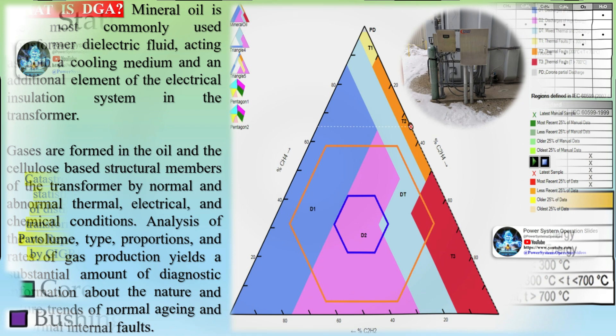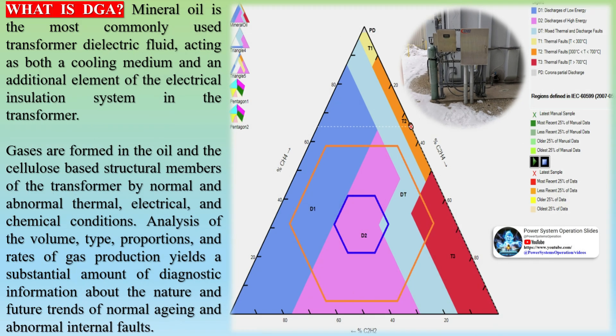In addition to the gas levels, DGA interpretations are based on a large number of variables, such as equipment type, liquid type, past history, history trending, manufacturer, equipment age, voltage, gallons, breather type, temperature, and service history, among others.